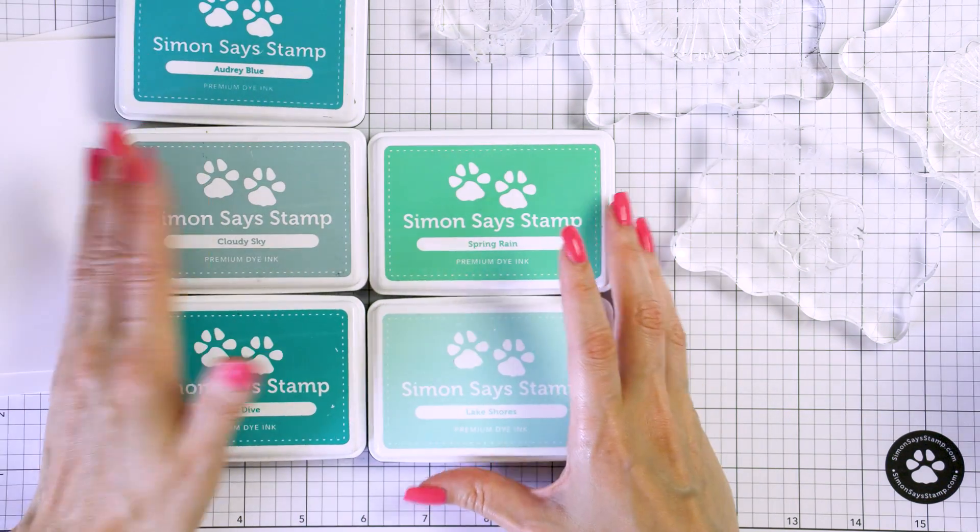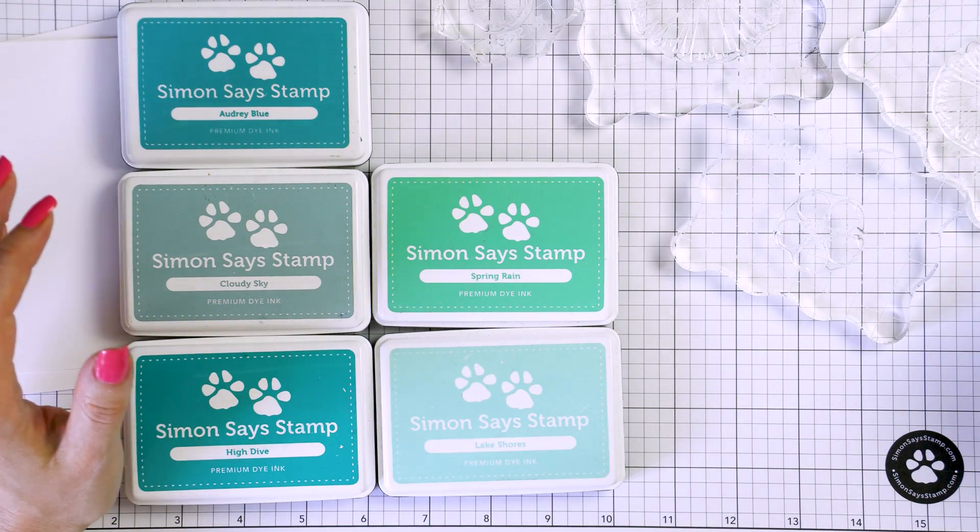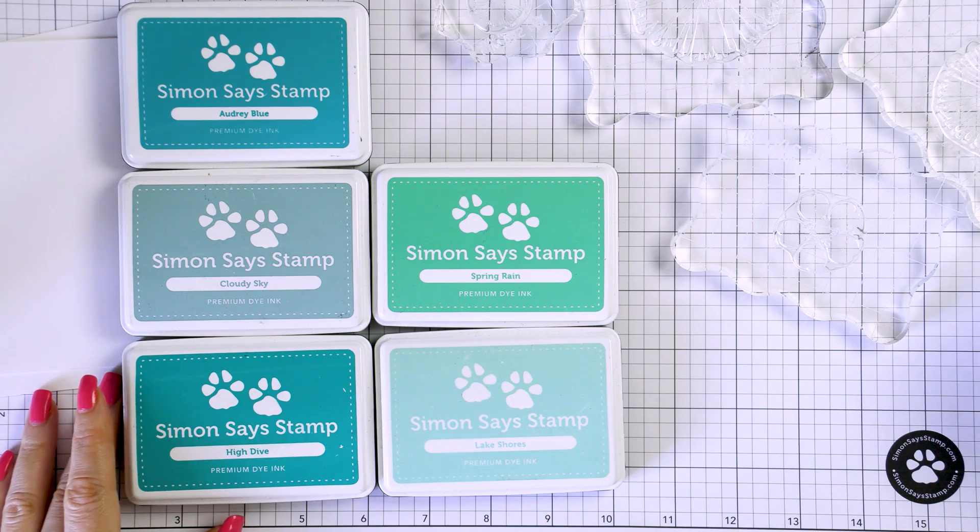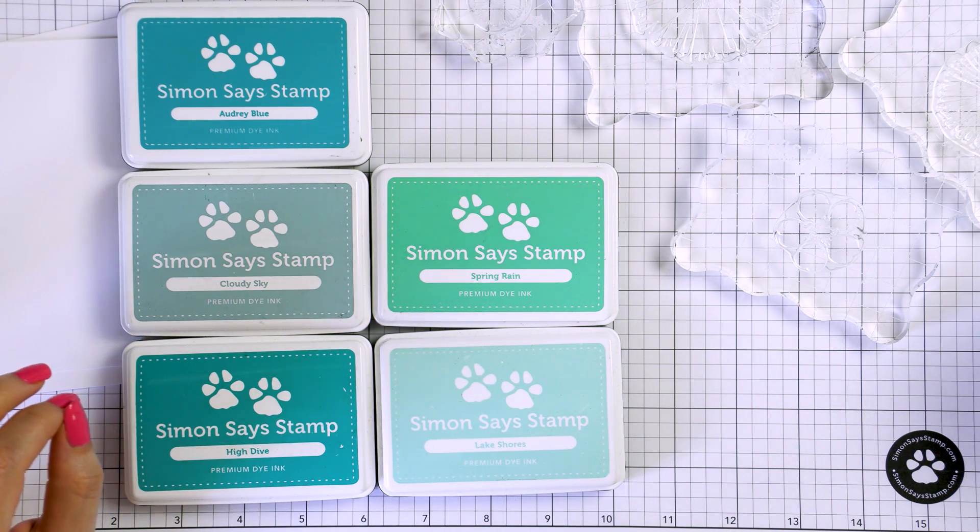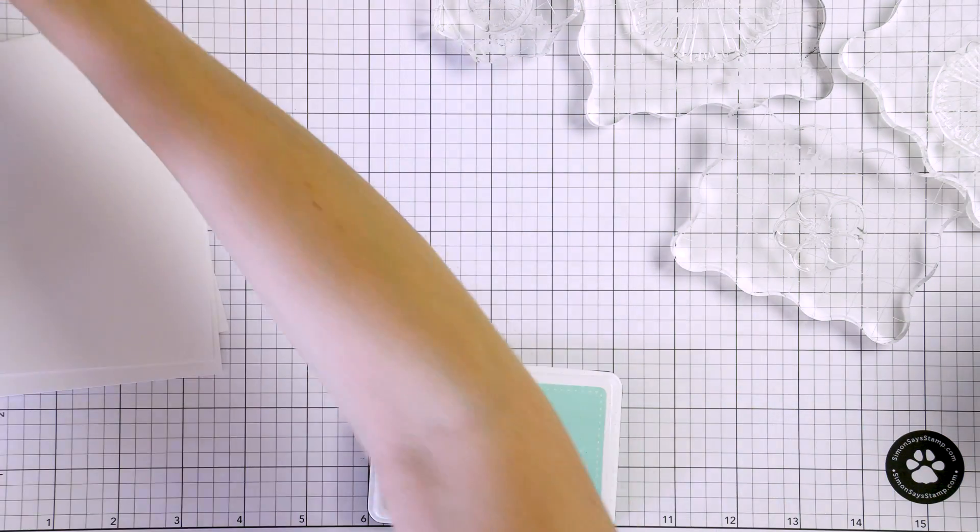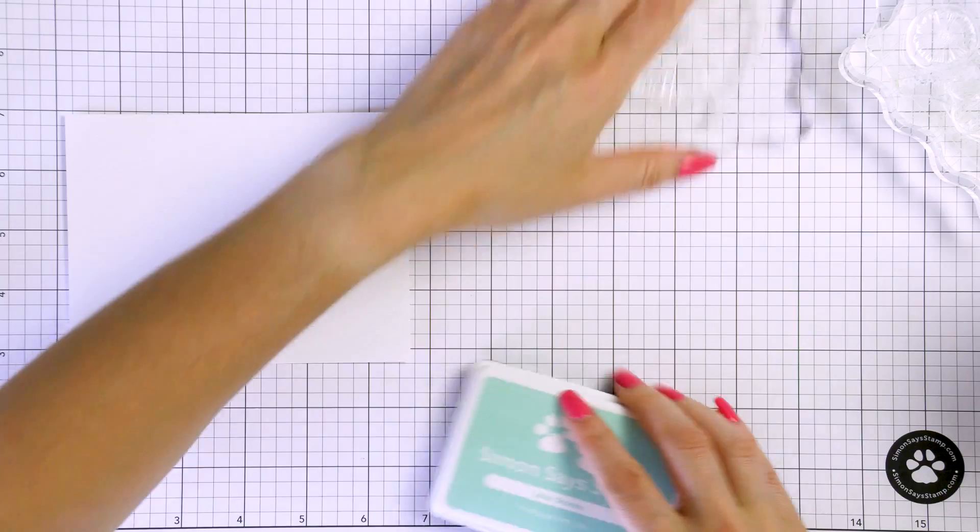I'm going to stamp three patterns today. They are going to be monochromatic and I'll stamp the flowers using various shades of the same color of ink. My first one is going to be stamped in blue and teal and the colors I have picked are Lakeshores, Spring Rain, High Dive, Cloudy Sky and Audrey Blue. All of these are Simon Says Stamp dye inks.